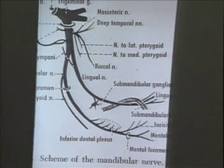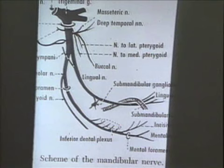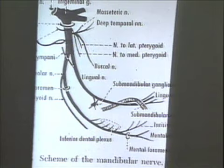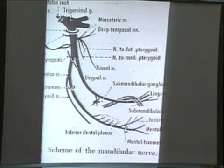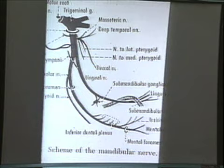Moving to the mandibular division — a mixed arrangement. We are at the trigeminal ganglion within the cranial cavity, exiting the foramen ovale. The trunk divides into a smaller anterior division, which is predominantly motor, with one outstanding exception: the buccal nerve, which is sensory. The other branches of the anterior division are motor branches to the muscles of mastication. The posterior division is mostly sensory, with the exception of the mylohyoid nerve, which supplies the anterior digastric and the mylohyoid muscle.